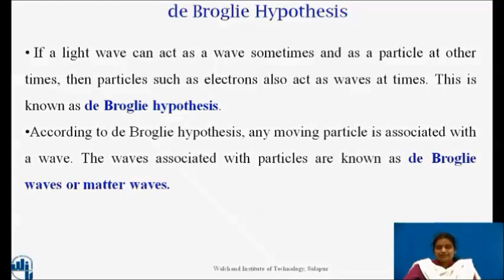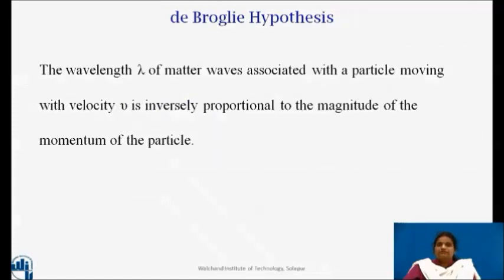According to de Broglie hypothesis, any moving particle is associated with a wave. The waves associated with particles are known as de Broglie waves or matter waves. The wavelength lambda of matter waves associated with a particle moving with velocity v is inversely proportional to the magnitude of the momentum of the particle. Thus, lambda is equal to h upon mv.